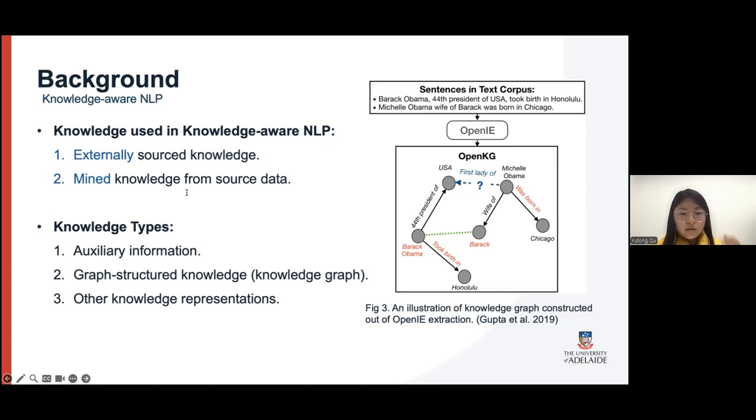Since the knowledge, the relations or auxiliary information can represent and cover more applicable information from more aspects from the source content, and even with the source content information, it can also benefit the informativeness and common sense, factual consistency of generated summaries in summarization tasks.